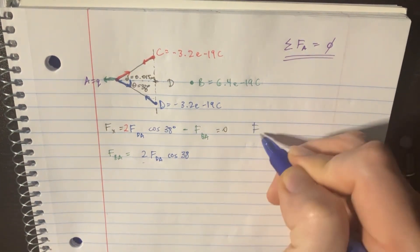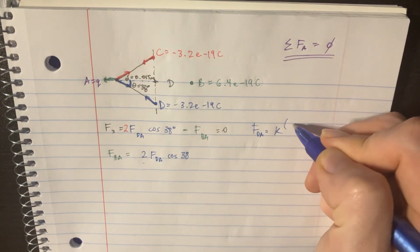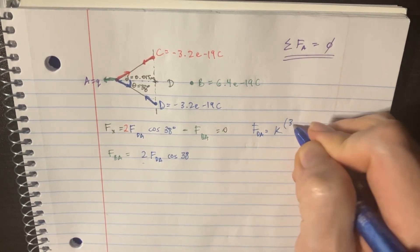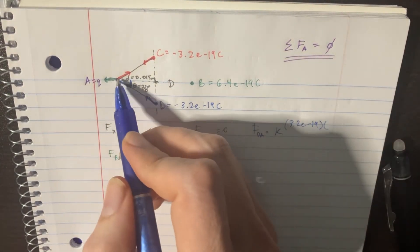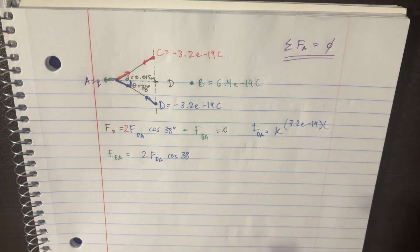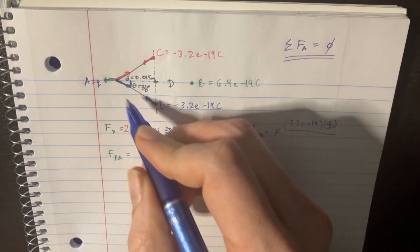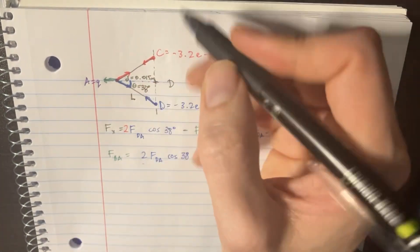And if we were to figure out FDA, that's just going to be equal to K times negative three. Actually, let's get rid of the negatives here. We don't need those. So that's 3.2 e to the negative 19 times. It's going to be times Q. But we don't know Q. We do know, however, this length here, L. Got to figure that out real quick.